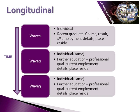Longitudinal research can be done over two, three, four, or five waves — however many times you need to. For example, in the first wave you might be working with a recent graduate, examining their degree course, the results of that, and their first employment details. In the second wave, maybe a year later, you interview the same person and look at whether they have undertaken any more education, whether they are working towards a professional qualification, their current employment details, where they live and work. Then perhaps you interview that same person again in another year's time and look at the same things to see if anything has changed.